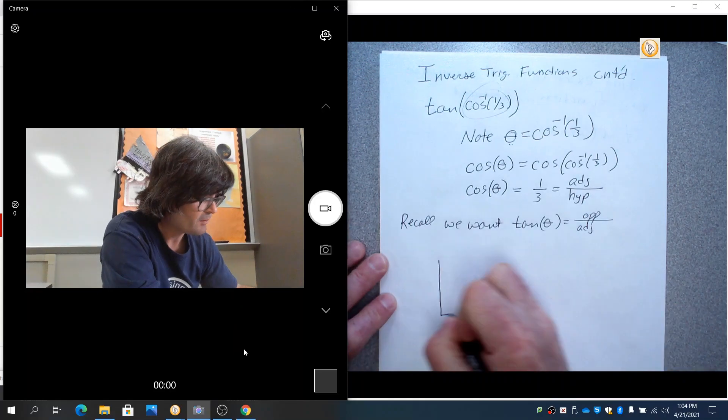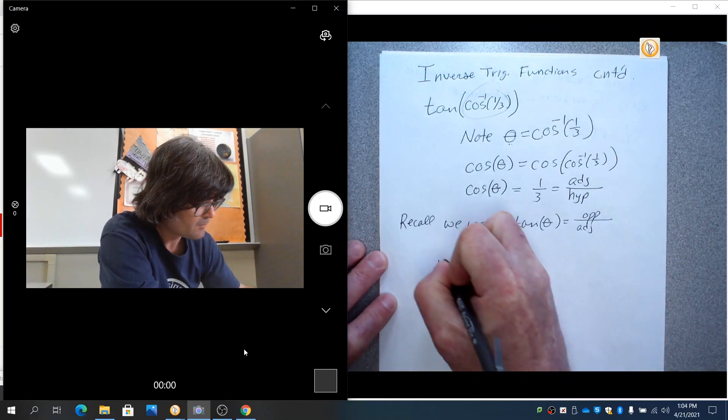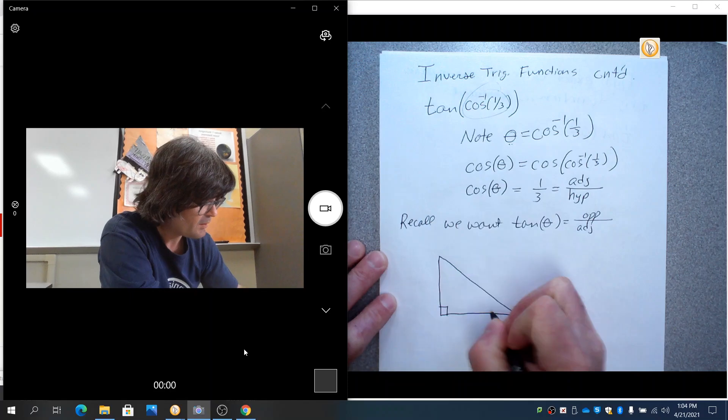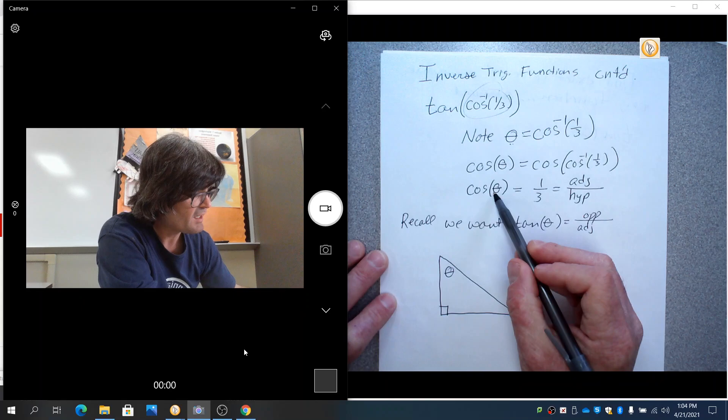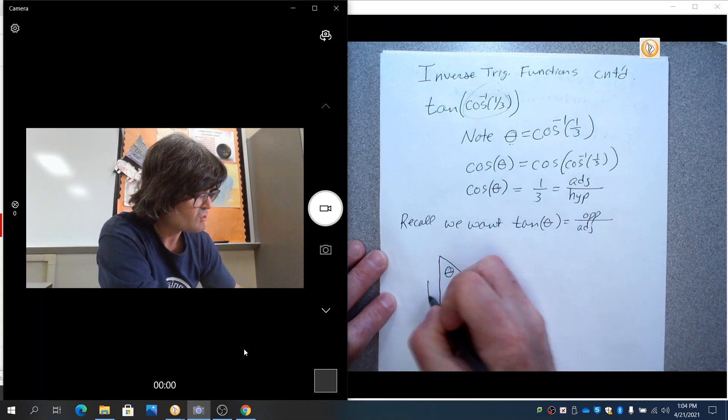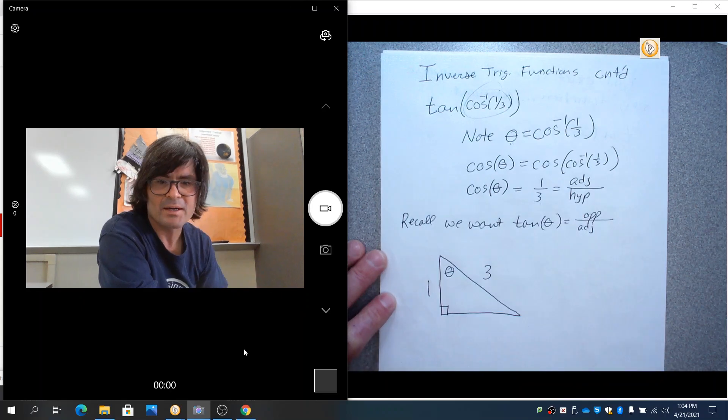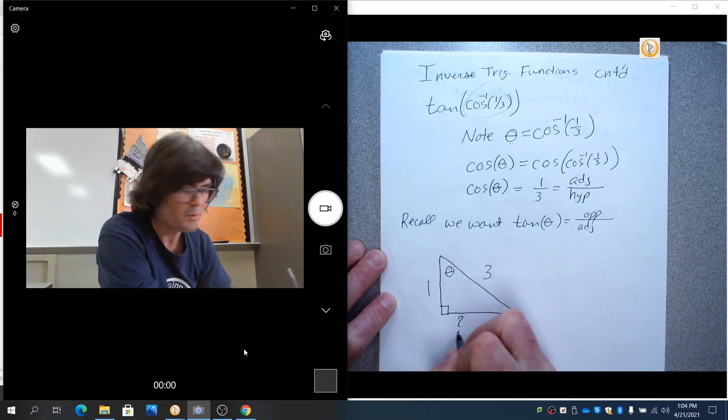So I'm going to draw myself a triangle. Put the theta anywhere you want, just right here is fine. And so if cosine theta is one-third, that means adjacent is one, hypotenuse is three, I want to call this question mark.